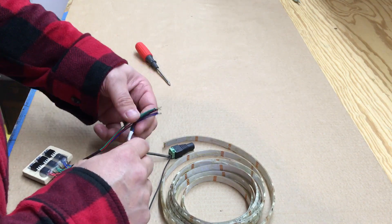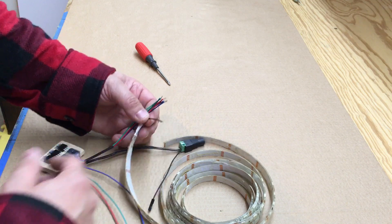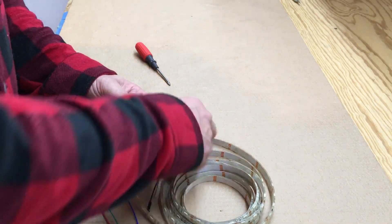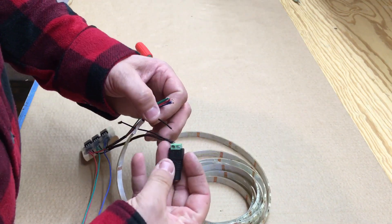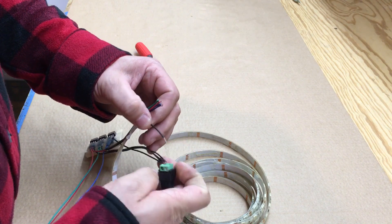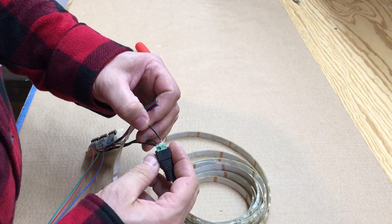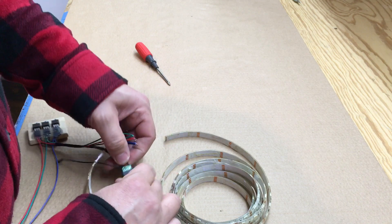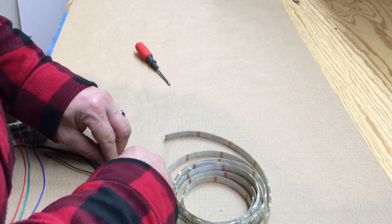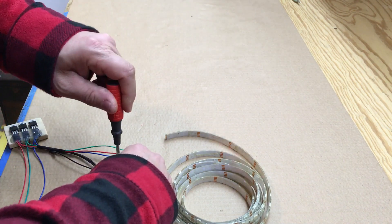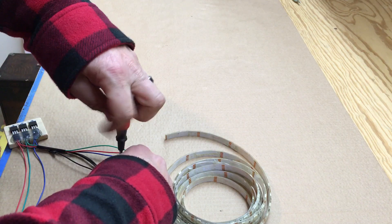So the black wire out of it is for 12 volts. So we're going to hook the 12 volt to the positive in the connector here. And we're just going to screw that down.